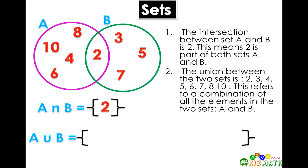Now what is the union of sets A and B? The answer is 2, 3, 4, 5, 6, 7, 8, 10.